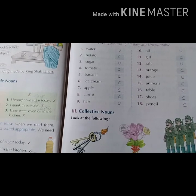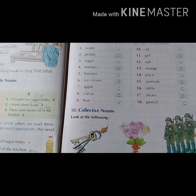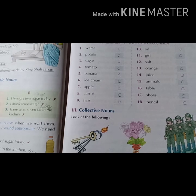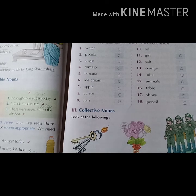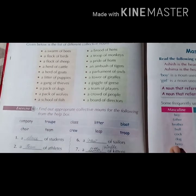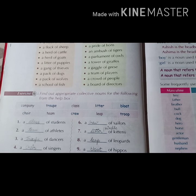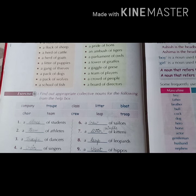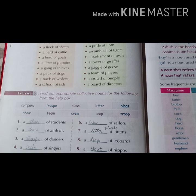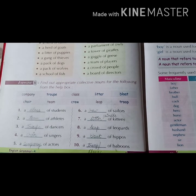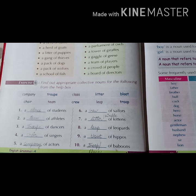Now the fifth type is collective noun. What is collective noun? A collective noun is a group of a specific noun, and such nouns are called collective nouns. Collective nouns are always termed as singular. Exercise number 6: Find out appropriate collective nouns. A class of students. A team of athletes. A troop of dancers. A choir of singers. A company of actors. A crew of sailors. A litter of kittens. A leap of leopards. A bloat of hippos. A troop or flank of baboons. So you can match your answers.